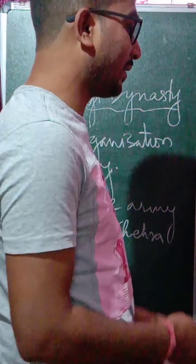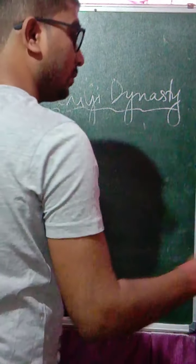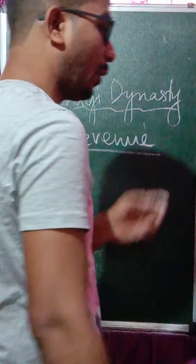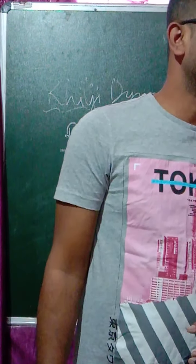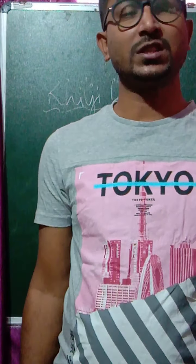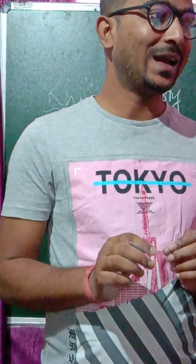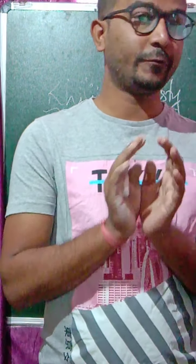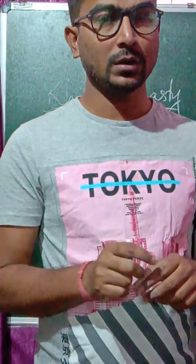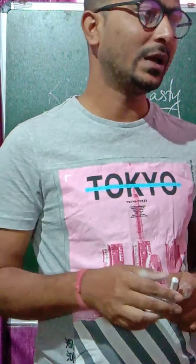The next area of reform was the revenue department — how he organized his revenue system. The land was measured in a proper and systematic way, and the share was fixed. According to the measurement of the land, a particular portion of share was calculated and fixed, and revenues were collected accordingly.